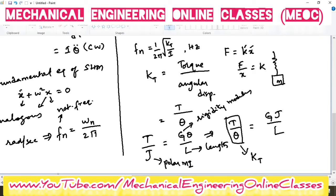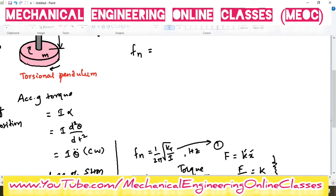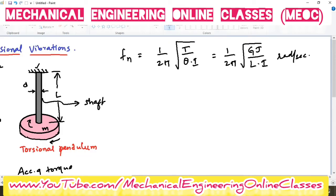Substituting KT = GJ/L into the natural frequency equation (equation 1), the natural frequency becomes: fn = (1/2π)·√(GJ / (L·I)). This is the equation of natural frequency in radians per second for free torsional vibrations.